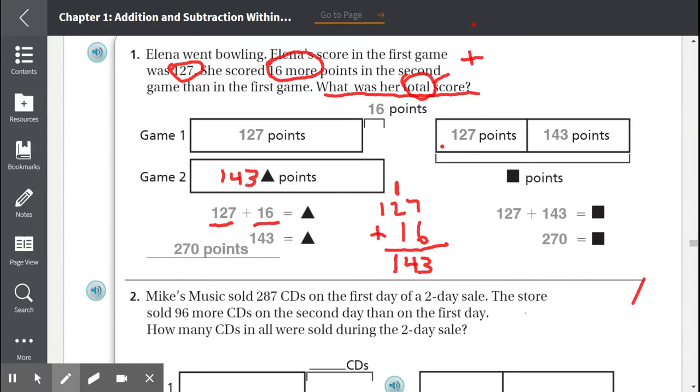But we're not done because they're asking for her total score, not just game 2, but her total score. To get the total, we add game 1 and game 2. So 127 plus 143. We start adding the ones place. 7 plus 3 is 10, we carry our 1. Add the tens place, 1 plus 2 is 3, 3 plus 4 is 7. Add the hundreds place, 1 plus 1 equals 2. So the total was 270.